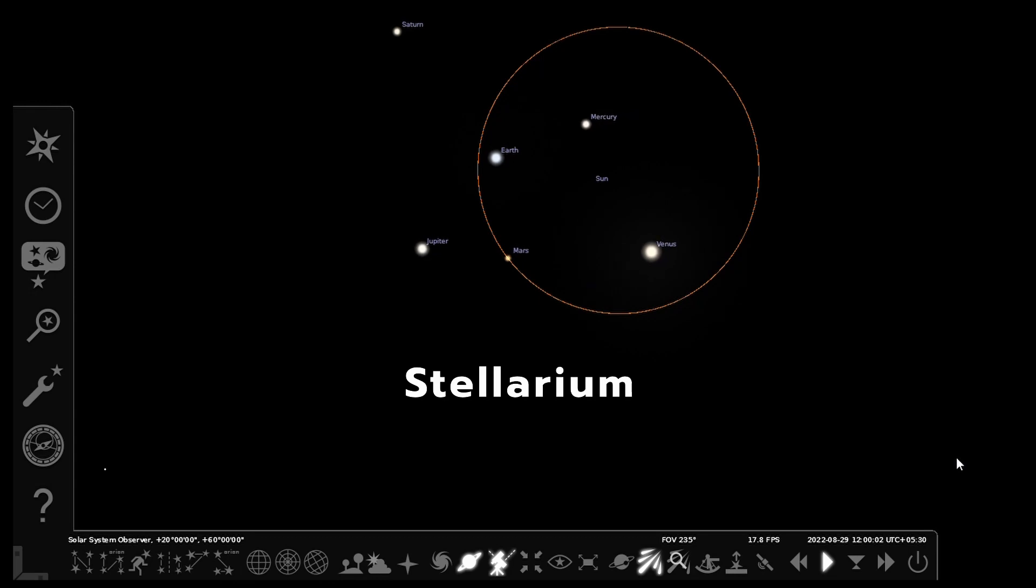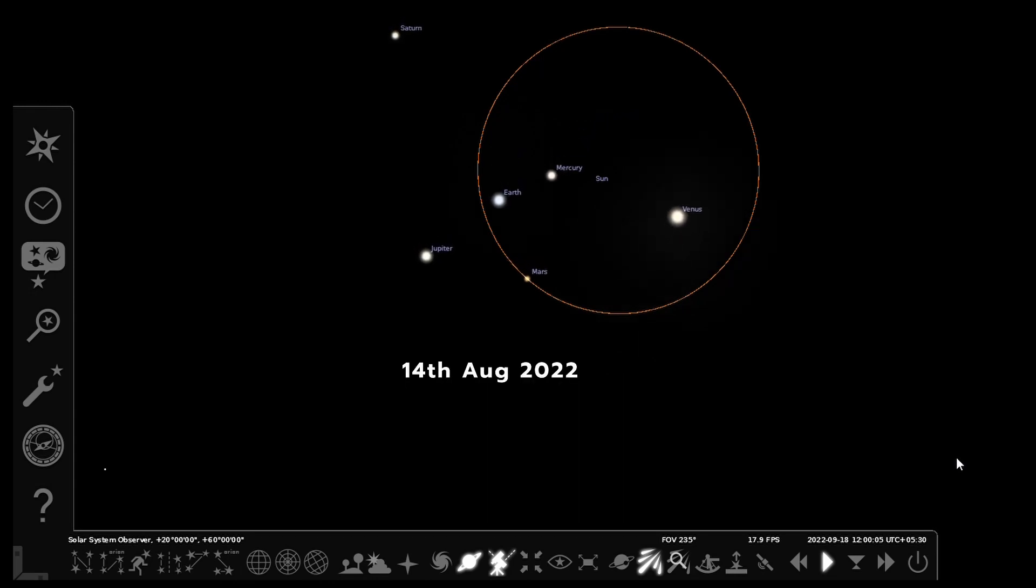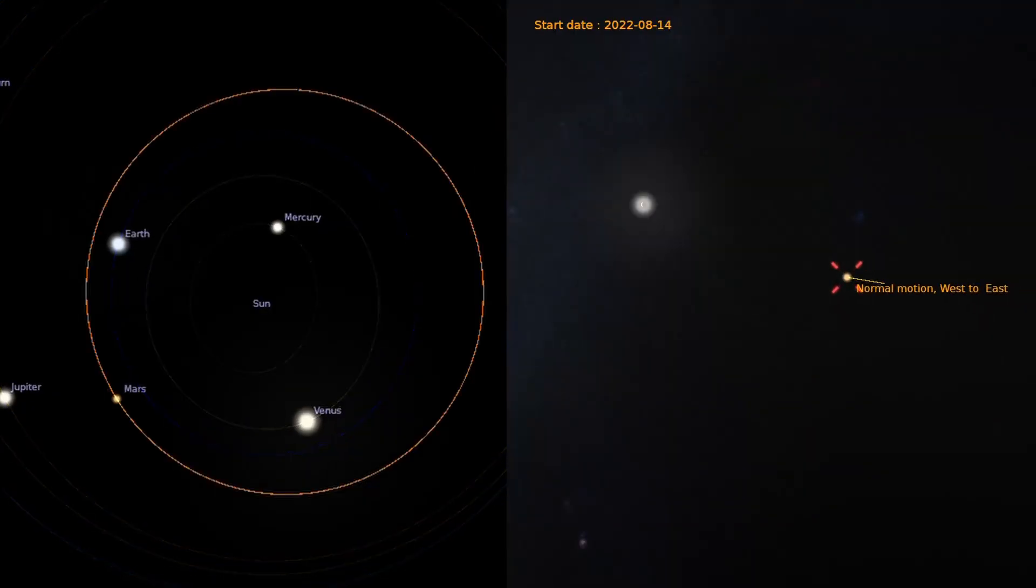Let us take help of Stellarium software to understand this better. The date is set to 14th of August 2022. On the left side, planets can be seen moving in their orbits. On the right side, Mars as seen in the sky from Earth is shown.